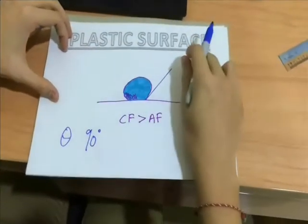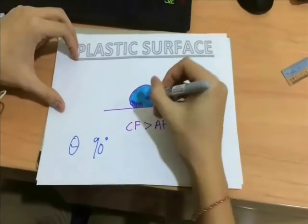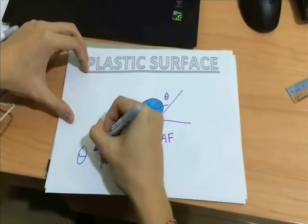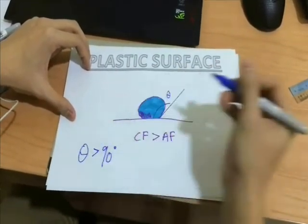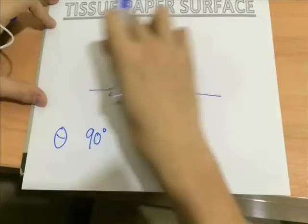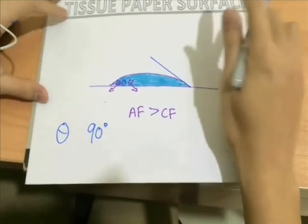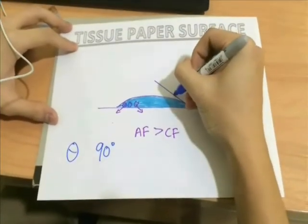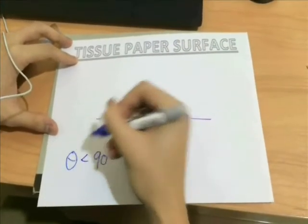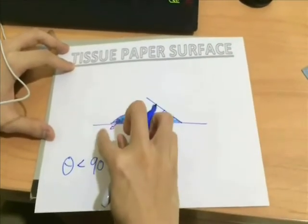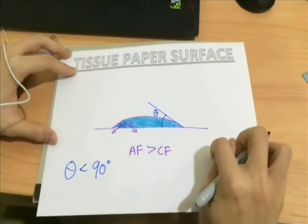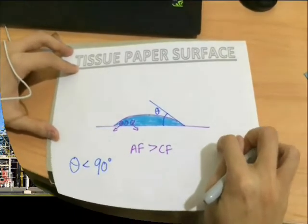For the plastic surface, we can observe that the angle is more than 90 degrees. This is the reason why the droplet does not wet the surface. For the tissue paper surface, we can observe that the angle is less than 90 degrees, and this is why the water droplet forms a thin film and wets the surface completely.